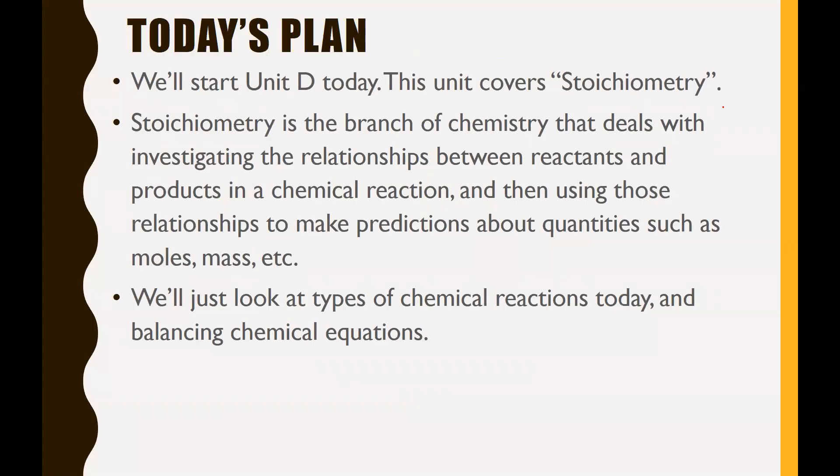Here's today's plan. We're starting unit D. Stoichiometry is the branch of chemistry that deals with investigating the relationships between reactants and products in a chemical reaction, and then using those relationships to make predictions about quantities such as moles, mass, etc. So today we're just going to look at the types of chemical reactions. We already looked at types of chemical reactions before, so this is going to be entirely review. And I also want to review balancing chemical equations with you today.